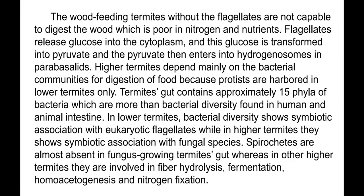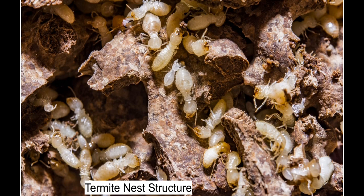The termite gut contains approximately 15 different phyla of bacteria, more than the bacterial diversity found in humans and animal intestines. In lower termites, bacterial diversity shows symbiotic association with eukaryotic flagellates, while in higher termites they show symbiotic association with fungal species. Spirochetes are almost absent in fungus-growing termites, whereas in other higher termites they are involved in fiber hydrolysis, fermentation, homoacetogenesis, and nitrogen fixation. The nest is made of pieces of wood with saliva, which works like cement.